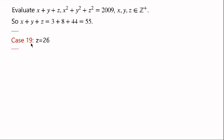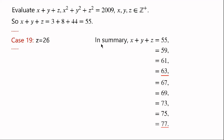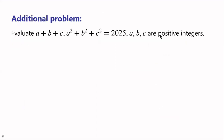Continuing through all cases up to case 19 (z equals 26, and so on), in summary x plus y plus z equals 55, 59, 61, 63, 67, 69, 73, 75, or 77.